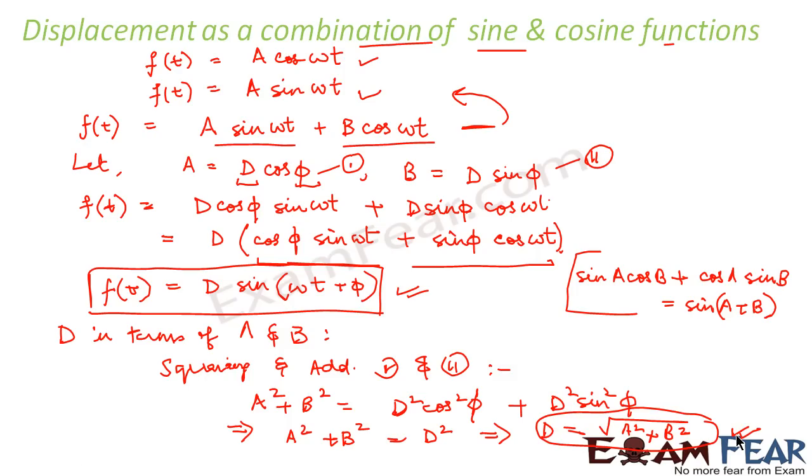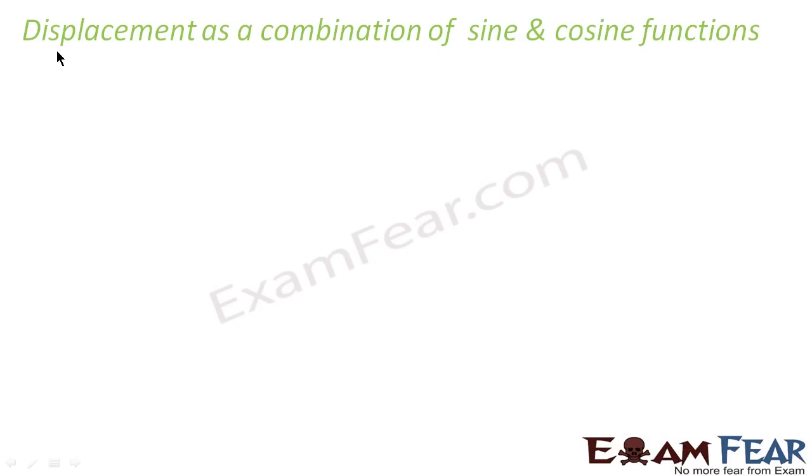Now, let us look at φ. Now, we will express φ in terms of A and B. So, in order to do that, what we will do? We will divide equation 2 by equation 1.